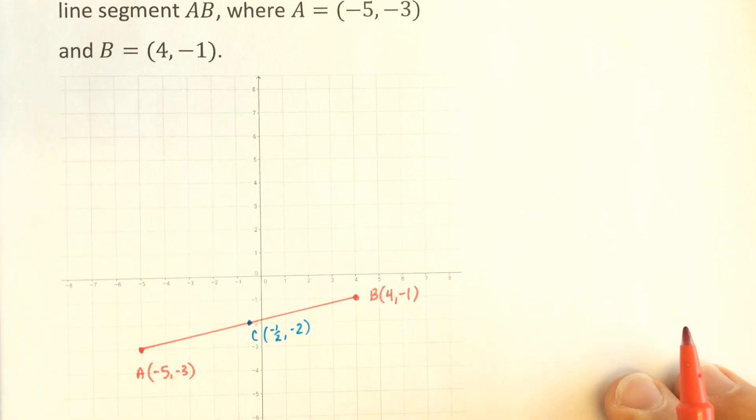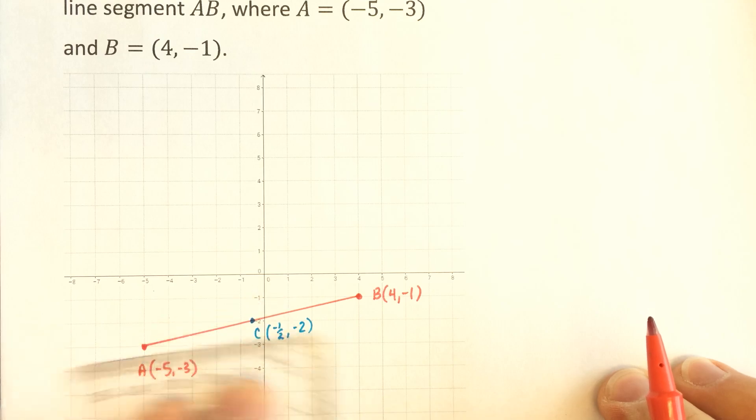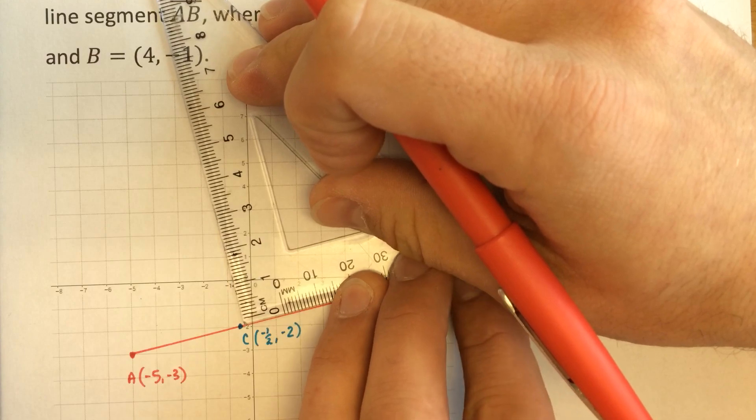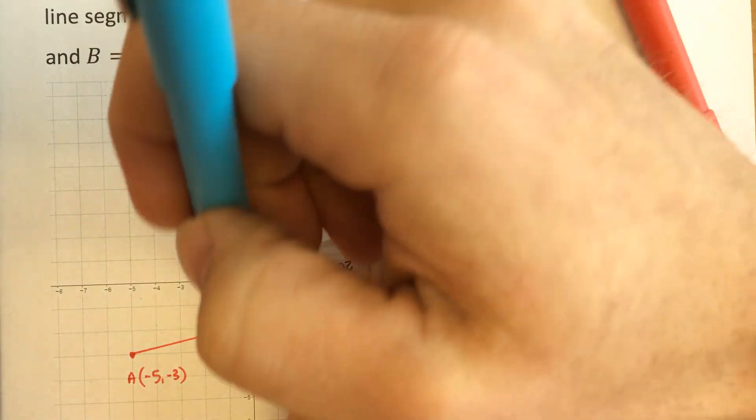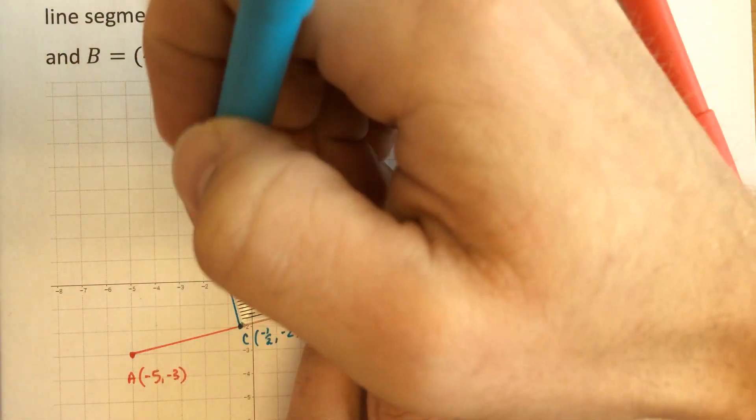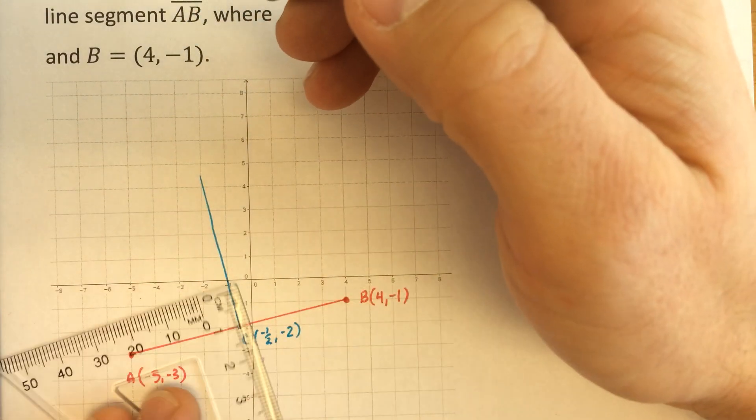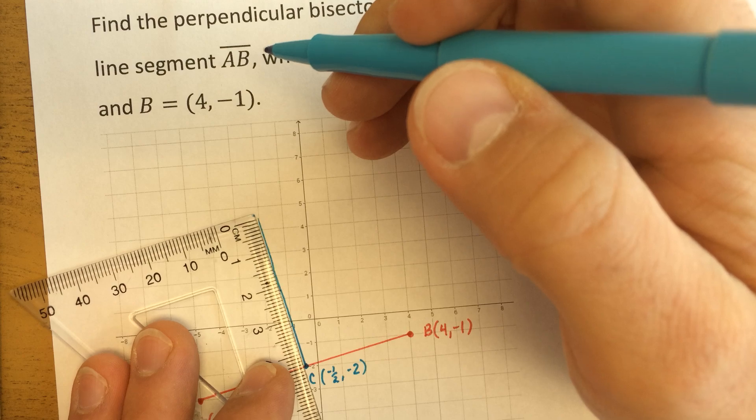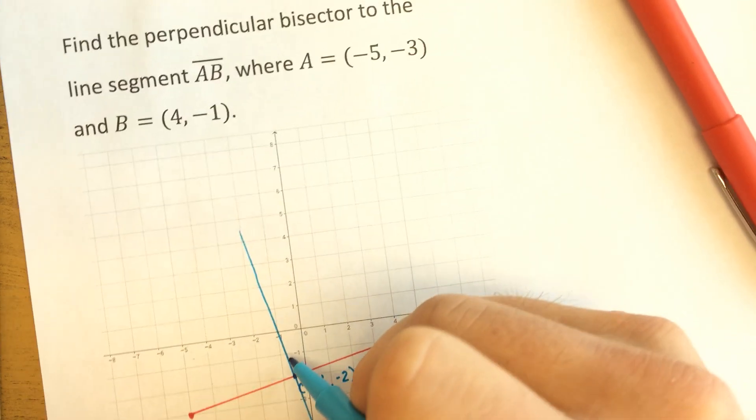And we're going to need that to be able to find the perpendicular bisector. Just to give you an idea what that thing kind of looks like, the perpendicular bisector is at a 90 degree angle to the line. Sorry, let me get this on here. Like that.